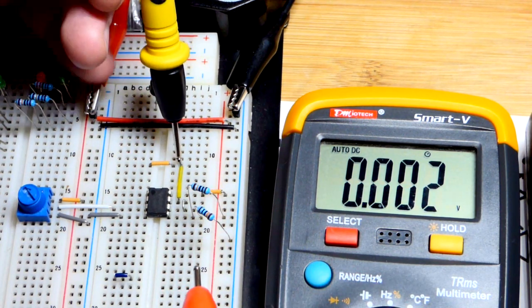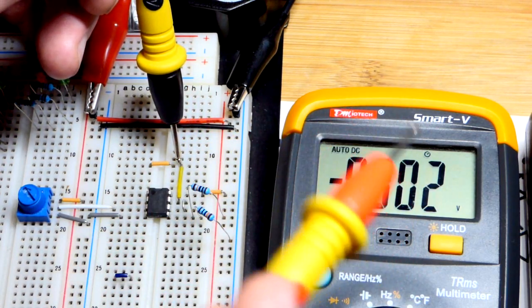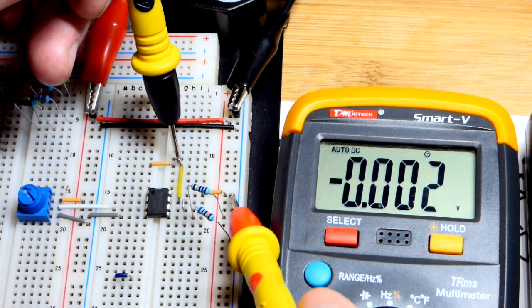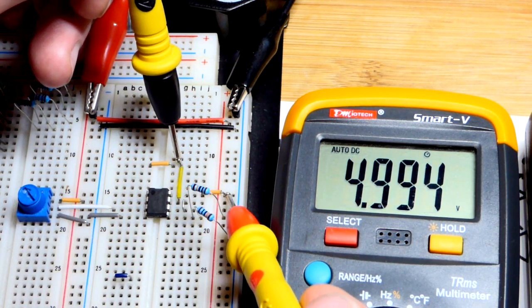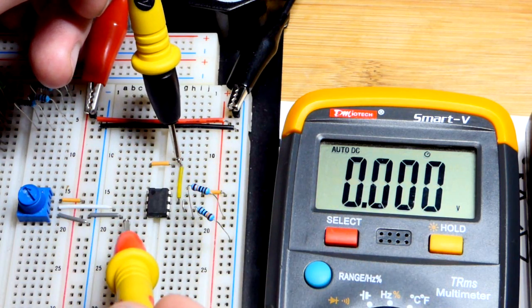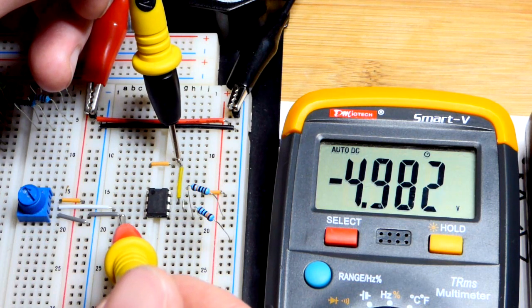If I put the black probe right there, we're looking at the voltage in relationship to the black probe. We declare that that's ground. Now you can see at the positive rail, we have just a spec less than 5 volts positive. And here we got a negative 5 volts right there.